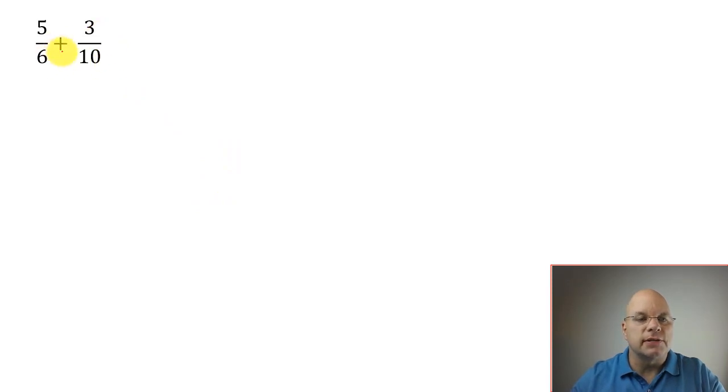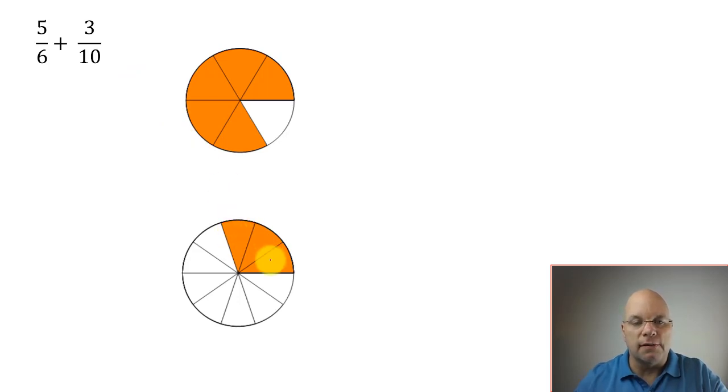Here we have 5 sixths plus 3 tenths. Anytime you have a fraction, you can think of the denominator as the size of the pieces and the numerator as how many pieces you have. So 5 sixths will be 5 pieces, and each piece is 1 sixth of the whole. We have 6 pieces in the whole, 6 sixths makes the whole, and we have 5 out of those 6 sixths. And then 3 tenths would look like this. We have 10 pieces, 10 tenths in the whole circle, and we have 3 of those tenths.